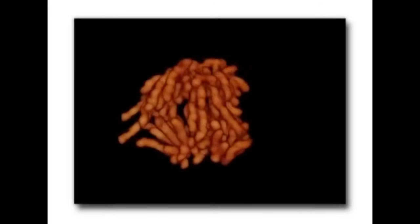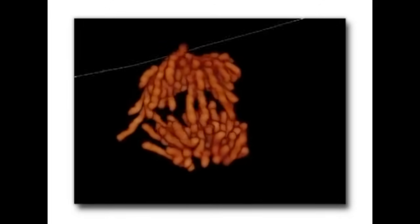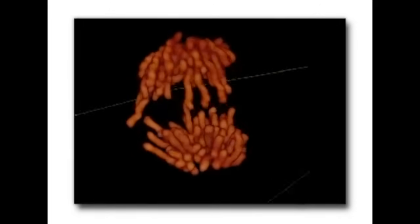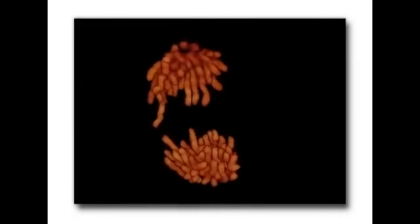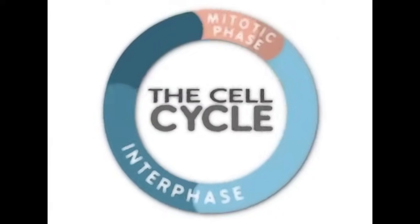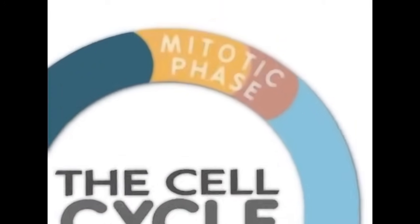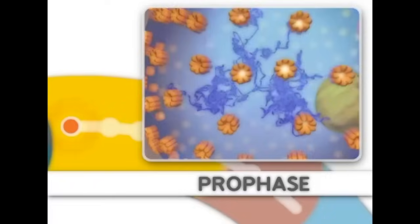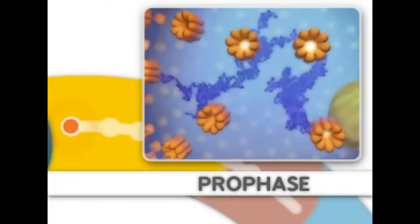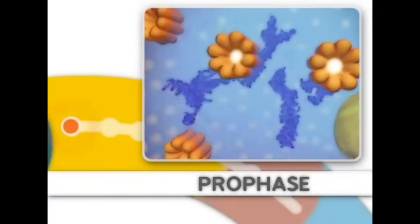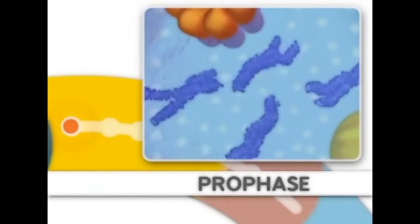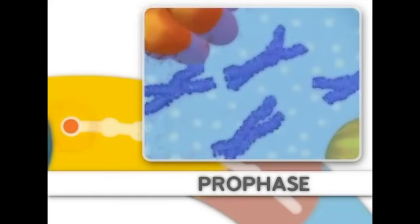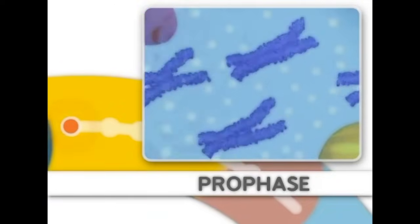Mitosis is the process of dividing the duplicated DNA of a cell into two new nuclei. Mitosis is split into distinct stages. The first stage is prophase, where the DNA condenses, organizes, and the classic chromosome structure appears.